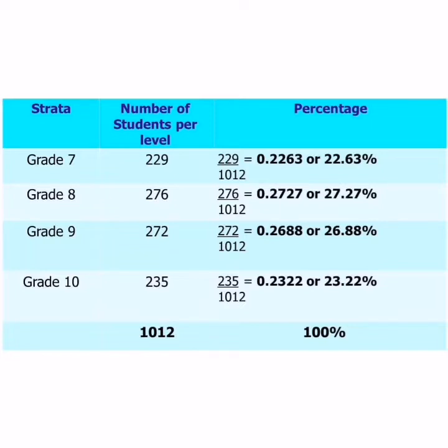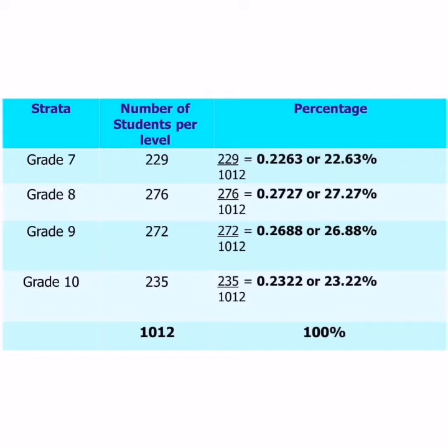For Grade 7, that's 229 over 1,012, which gives us 0.2263 or 22.63%. For Grade 8, 276 over 1,012 gives us 0.2727 or 27.27%. For Grade 9, 272 over 1,012 gives us 0.2688. For Grade 10, 235 divided by 1,012 gives us 0.2322 or 23.22%.